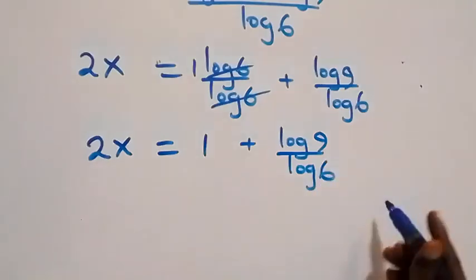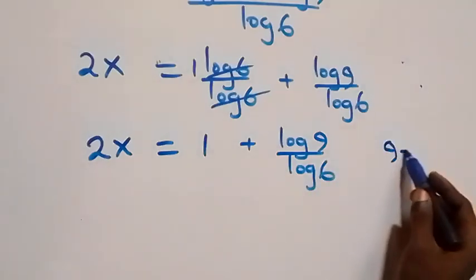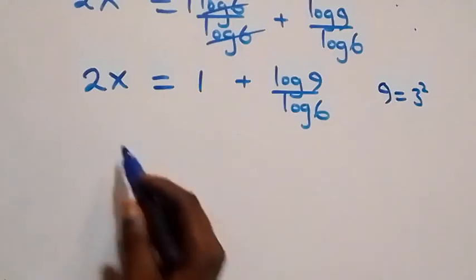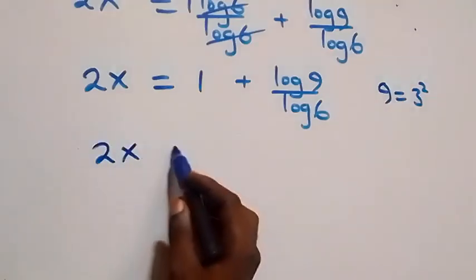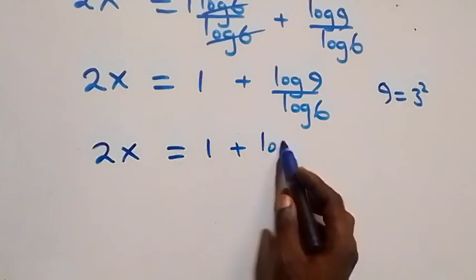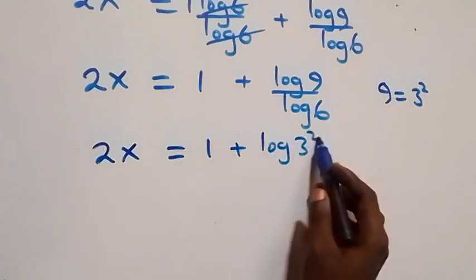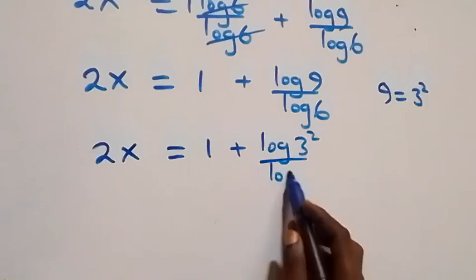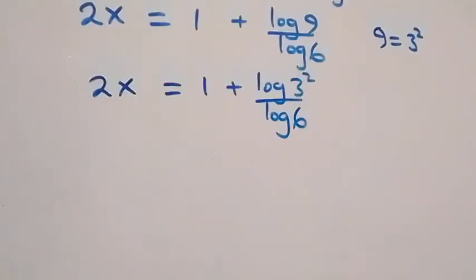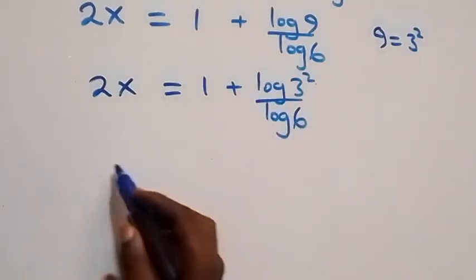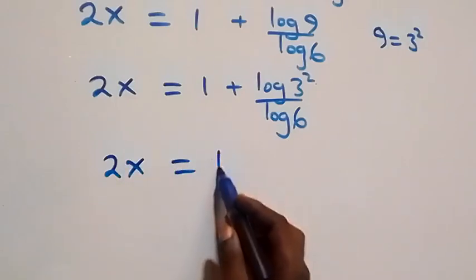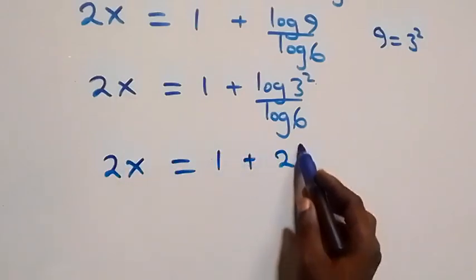Here we can express 9 as 3 times 3, which is 3 squared. So we have 2x equals to 1 plus log of 3 squared over log 6. Then we apply the power rule of logs — the 2 comes down — giving 2x equals to 1 plus 2 log 3 over log 6.